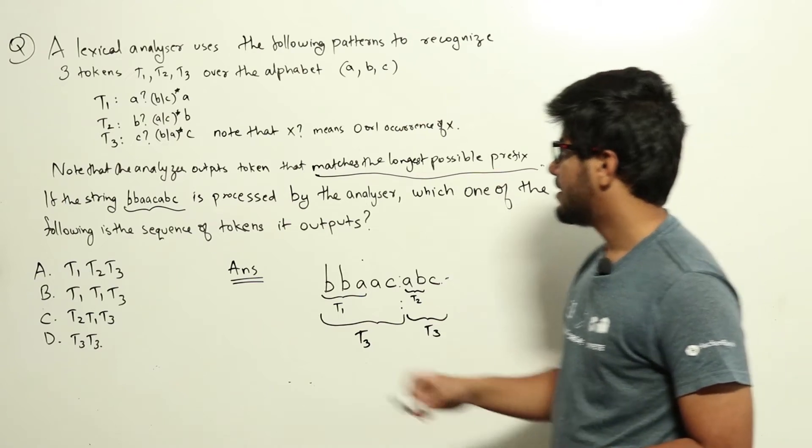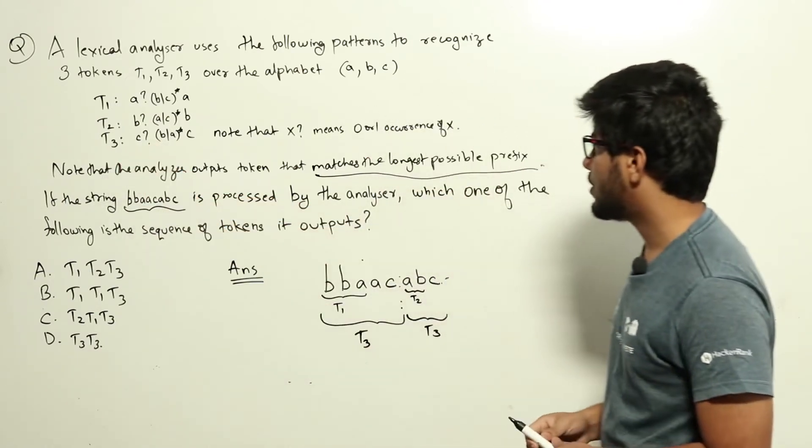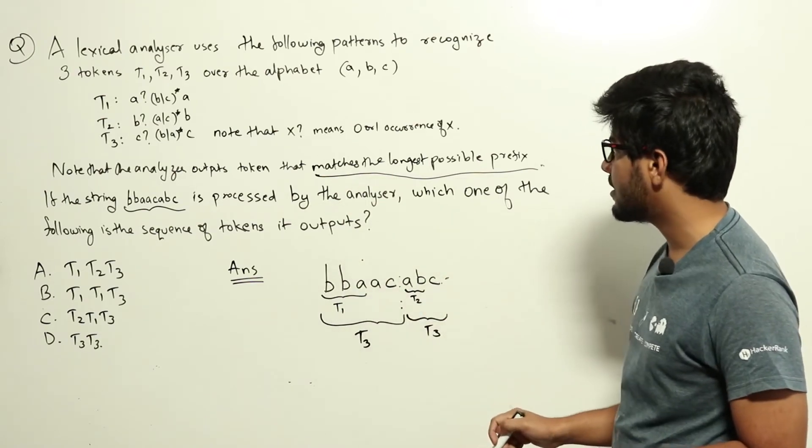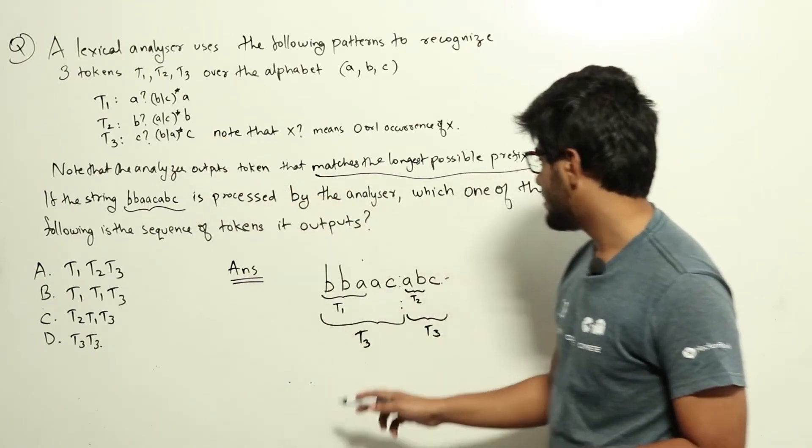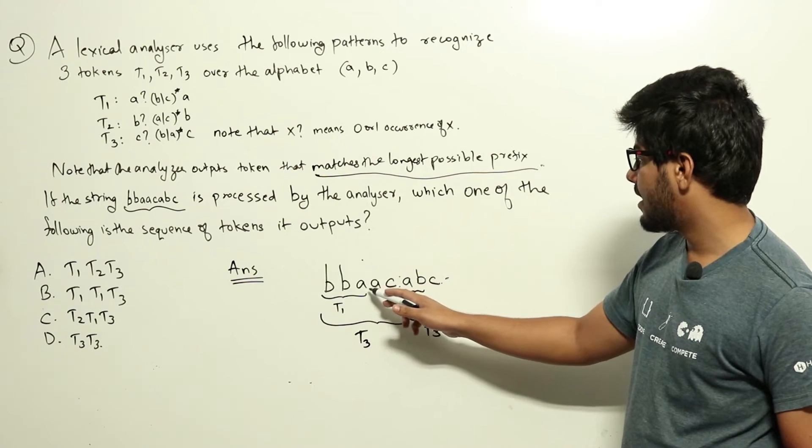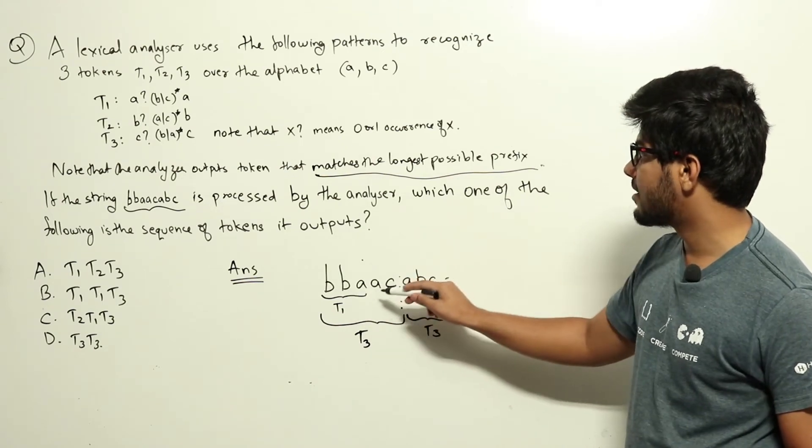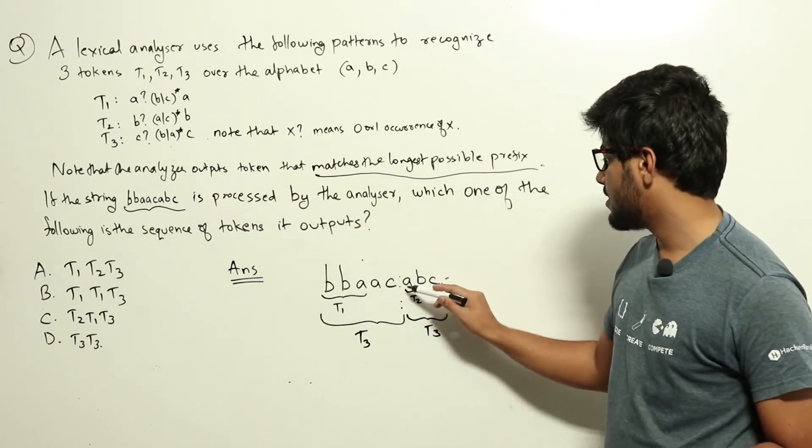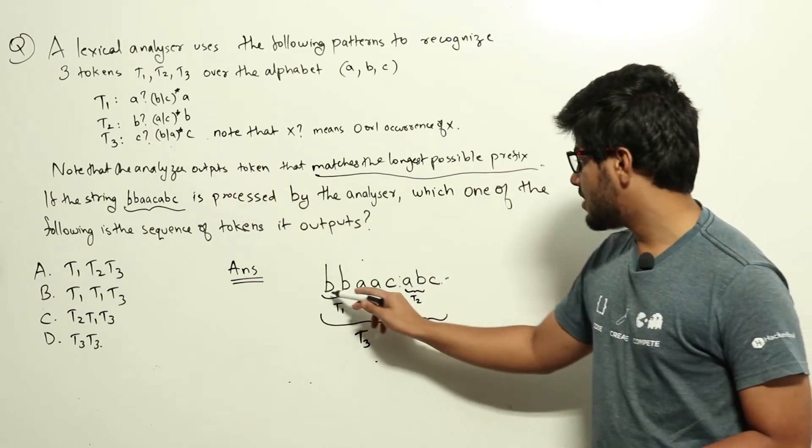Let's take T3. Zero or one occurrence of c, the starting one is not c, so it will be zero occurrence of c, then b or a star bbaa we can match up to here, b b a using this part and ending with c, so c, meaning this is T3.